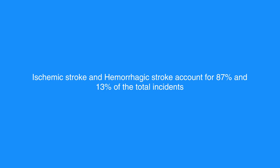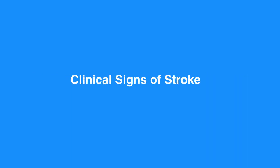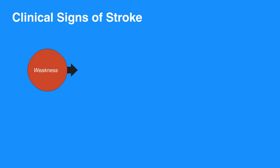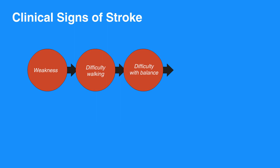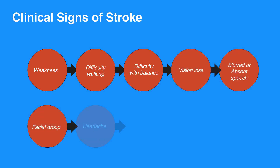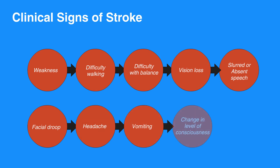In general, the symptoms of ischemic and hemorrhagic strokes are similar; however, the treatments are very different. Clinical signs of stroke depend on the region of the brain affected by decreased or blocked blood flow. Signs and symptoms can include weakness or numbness of the face, arm, or leg, difficulty walking, difficulty with balance, vision loss, slurred or absent speech, facial droop, headache, vomiting, and change in level of consciousness.